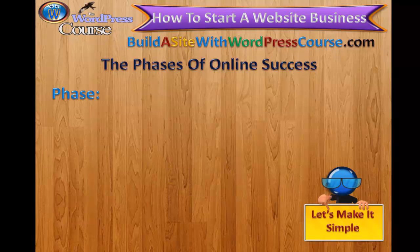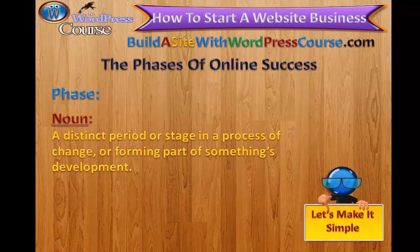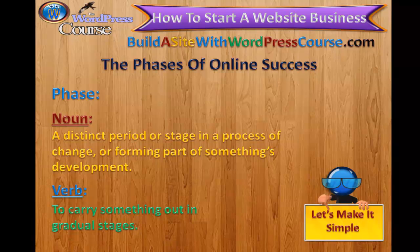The word 'phase' — when used as a noun, it's a distinct period or stage in a process of change, forming part of something's development. When used as a verb, it means to carry something out in gradual stages. Internet marketing success must be learned in gradual stages.